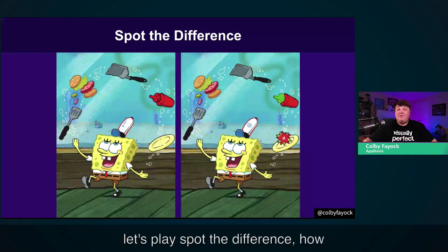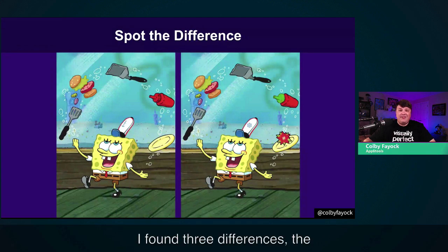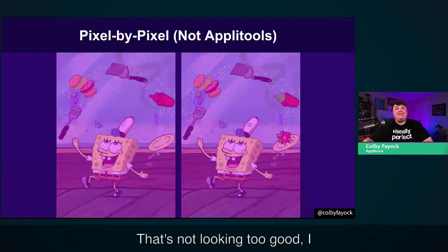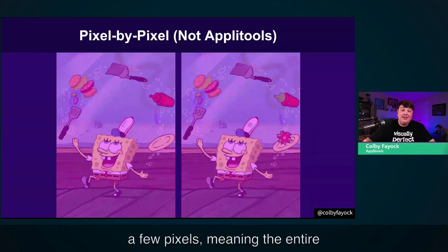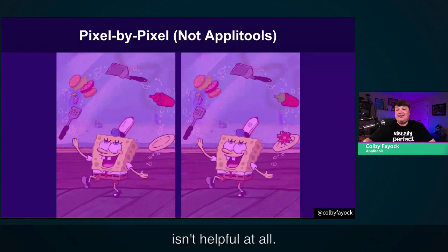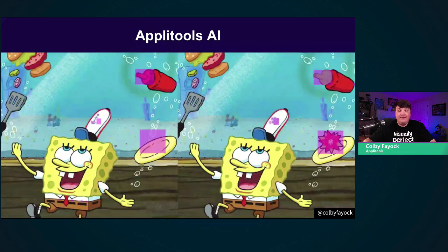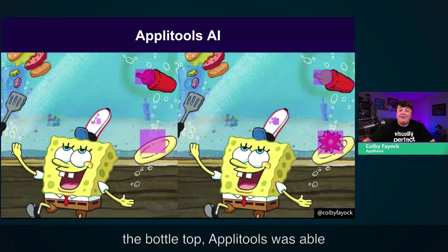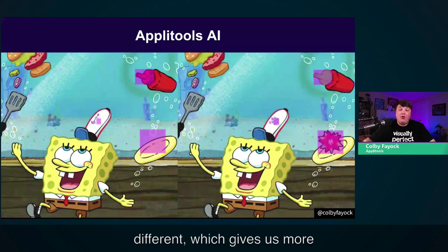By running Applitools Eyes on your project, you're using real images that show what users are actually seeing. This is critical, where a broken image might not show up in a failed test, or an unusable form like before. But part of what makes Applitools awesome is that it's powered by AI. To show a quick example, let's play spot the difference. I found three differences: the little hat logo, what's on the plate, and the ketchup top. With basic pixel-by-pixel visual testing, the entire image ends up flagged because the pictures were off by just a few pixels — that's not helpful. But by flipping on Applitools, we can pick up exactly the right differences intelligently.